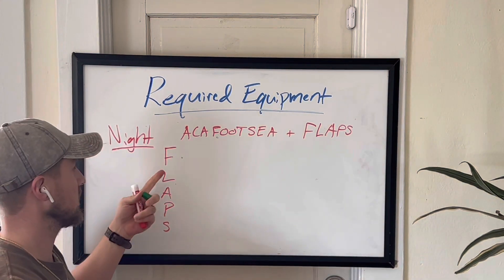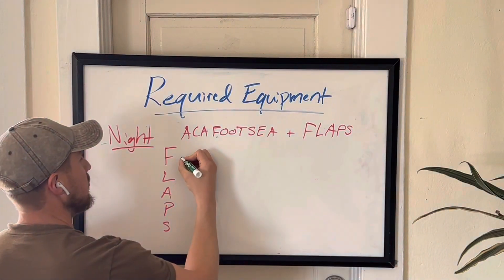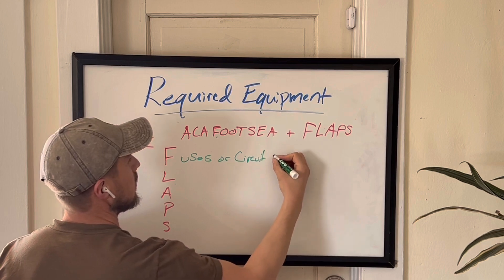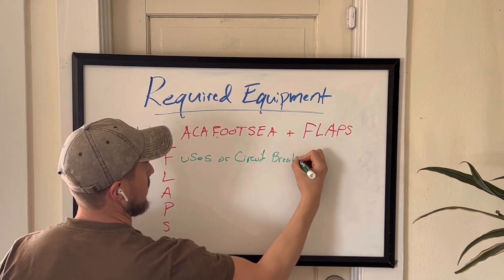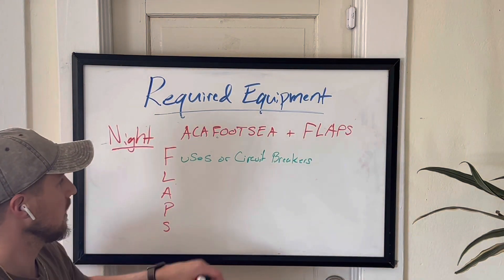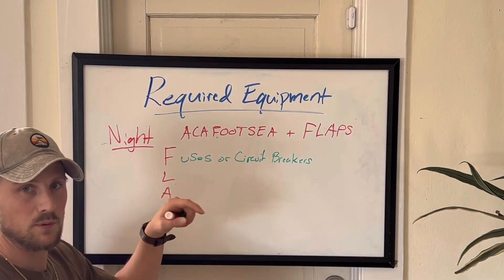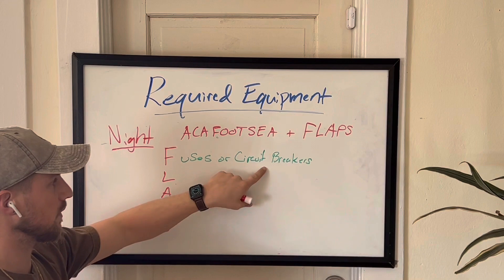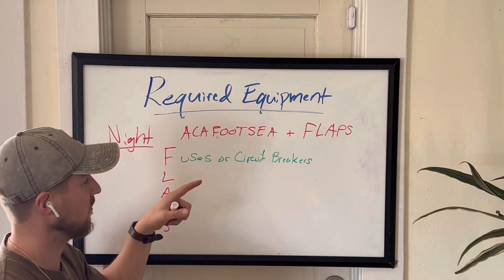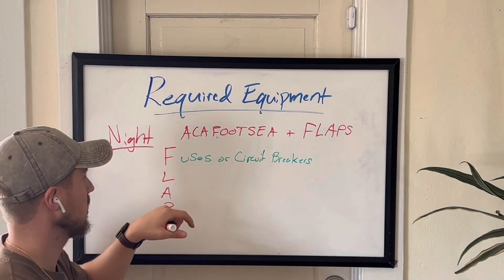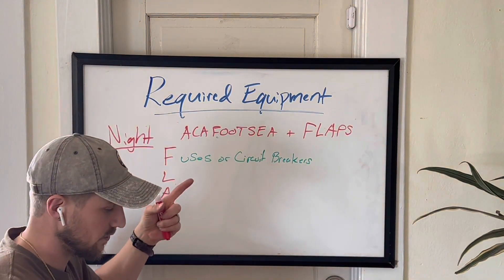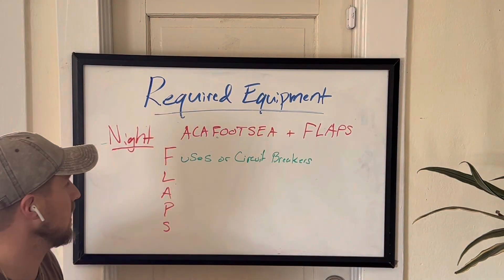So let's go through it. The F in FLAPS is for fuses or circuit breakers — you have to have one of the two. Most new aircraft have circuit breakers because they're easier; you can just pop them back in. But you also have to have replacements: if you have circuit breakers you need a replacement set, and if you have fuses you need three replacements for each fuse. This is all about maintaining your electricity and having backups at night.